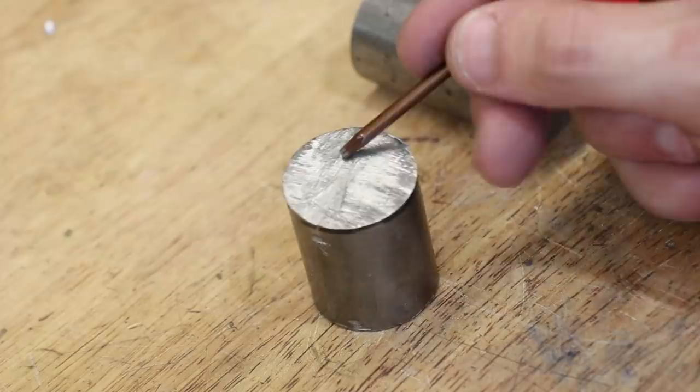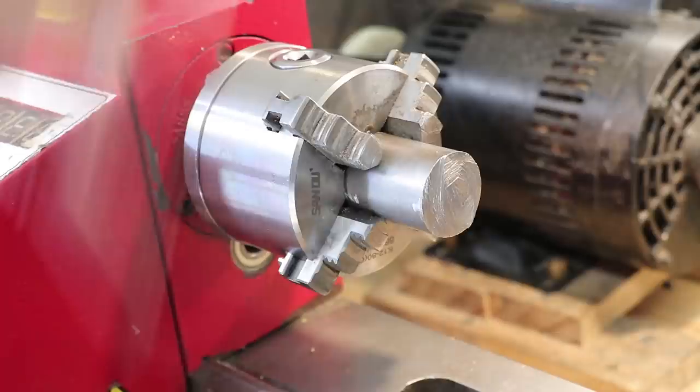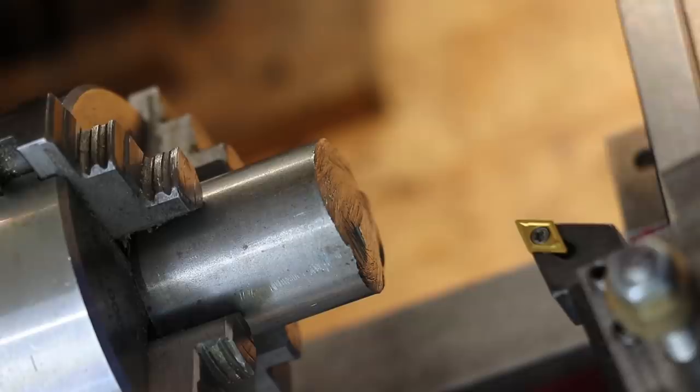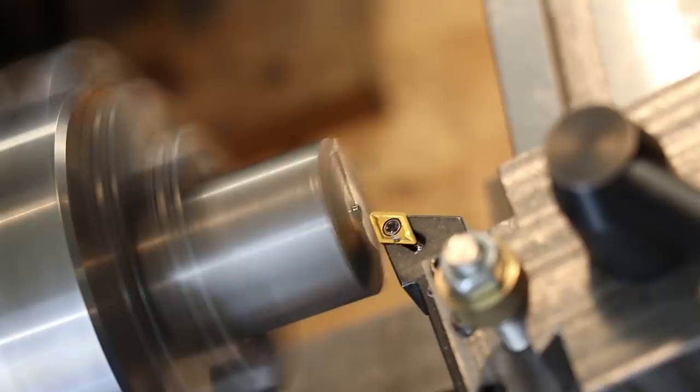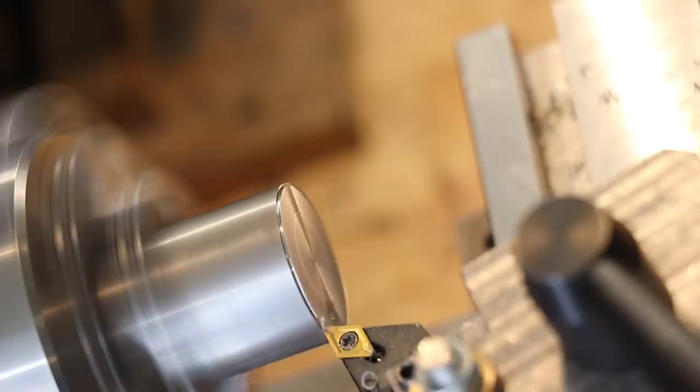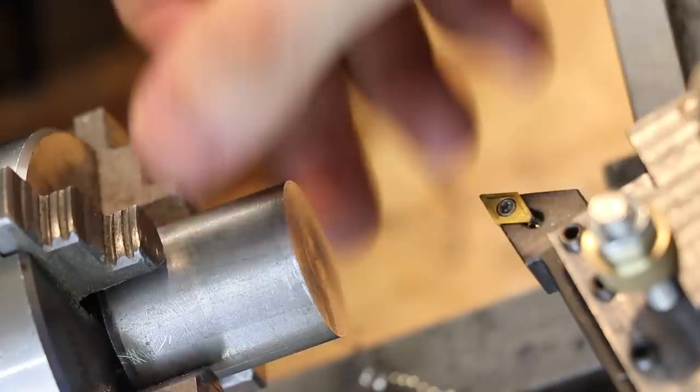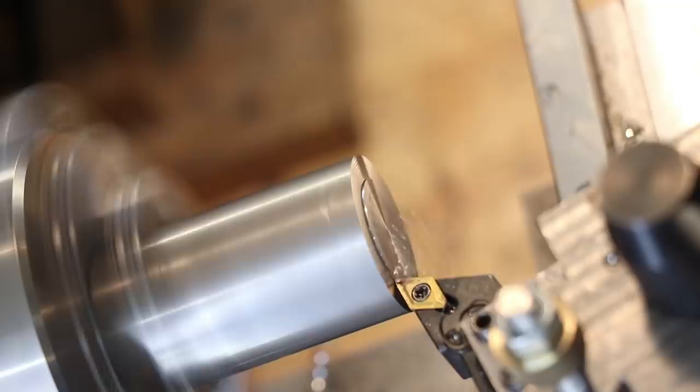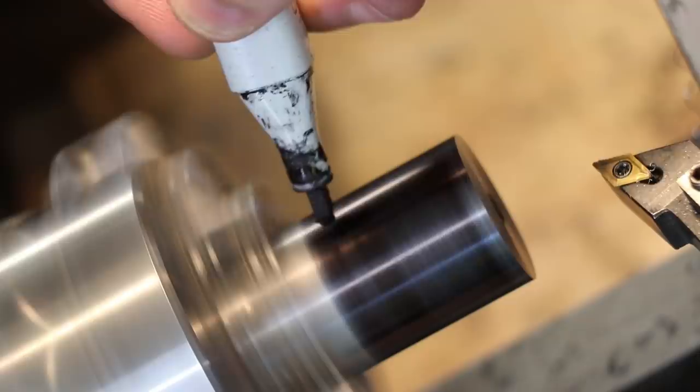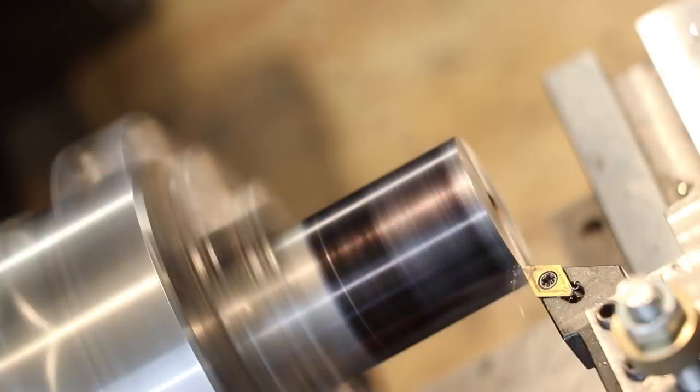The first thing I'll need to do is clean up each of the parts in the lathe. This piece will form the upper body of the boring head, the part that gets held in the mill.